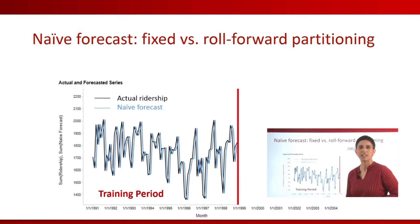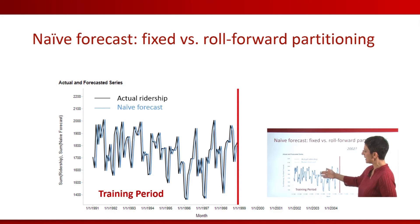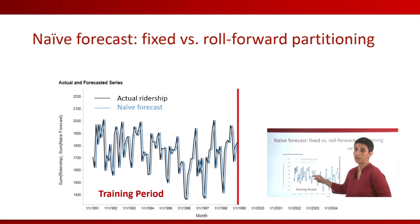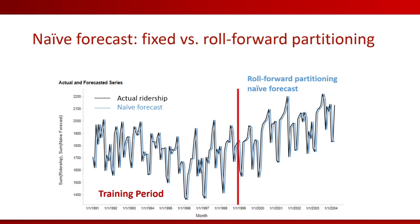Let's consider naive forecasts in fixed partitioning versus roll-forward partitioning. Suppose that I have this monthly data here, and I'm creating naive forecasts for the training period. The black line is the actual ridership; the blue line is the naive forecast, which is simply copying the previous value in the training period. If I'm rolling forward month by month, then my naive forecasts will also be a one-step-back value in the validation period. This is what naive forecasting is going to look like in validation.